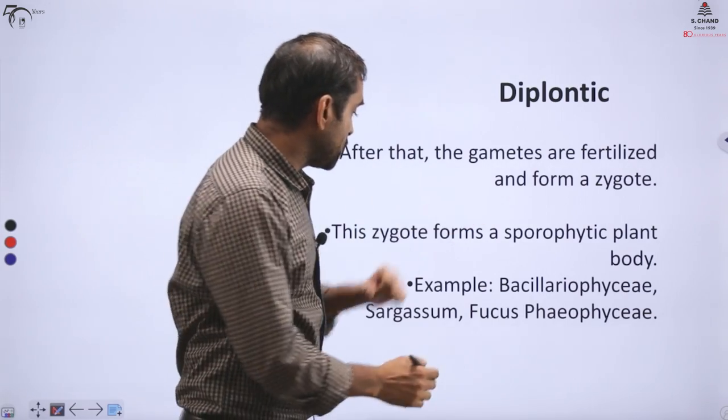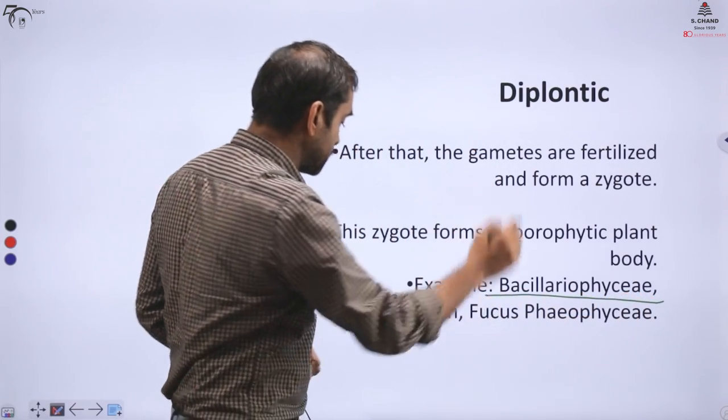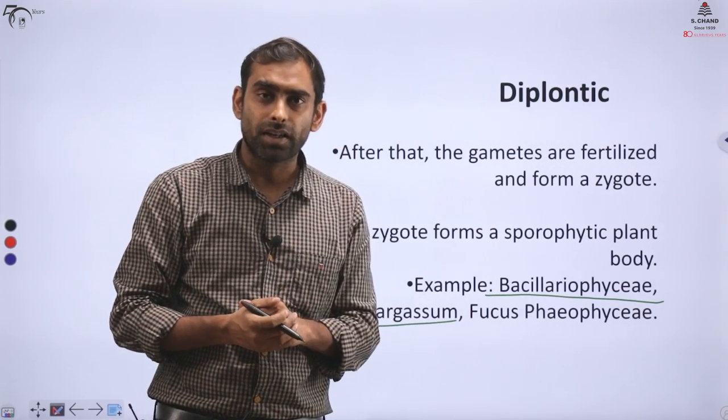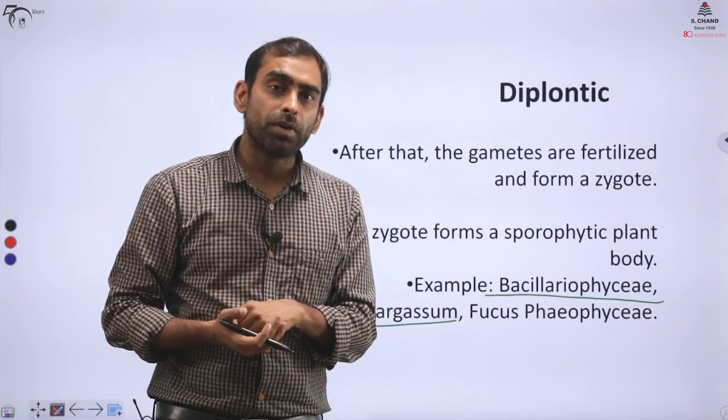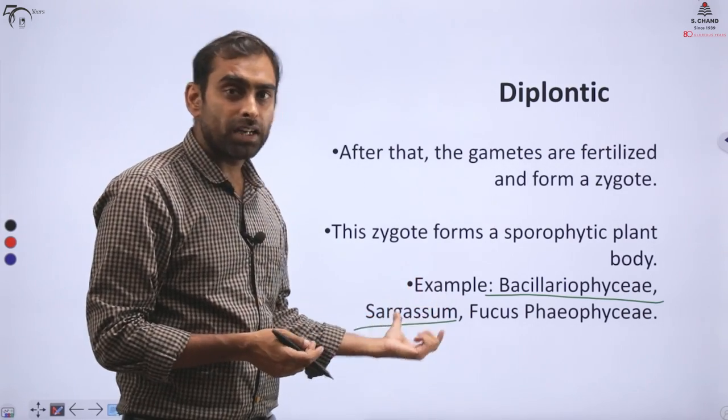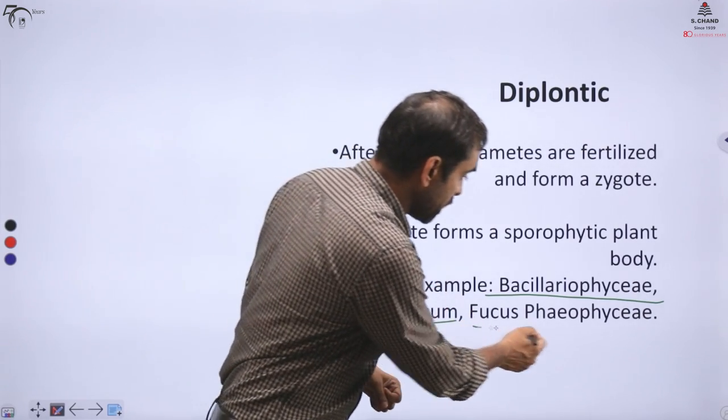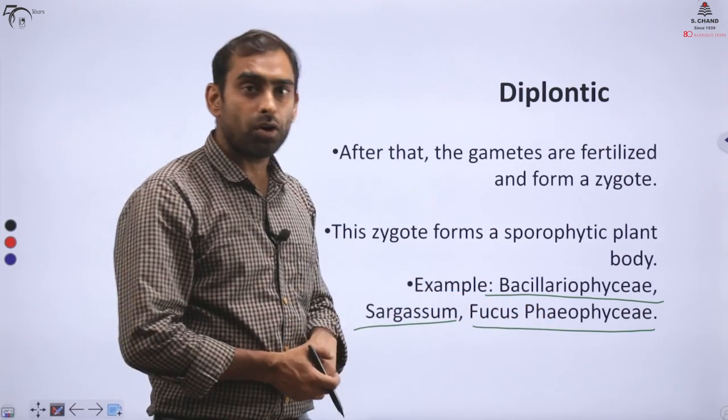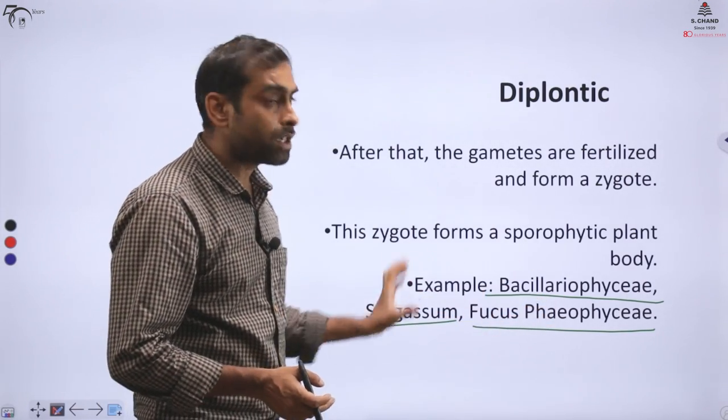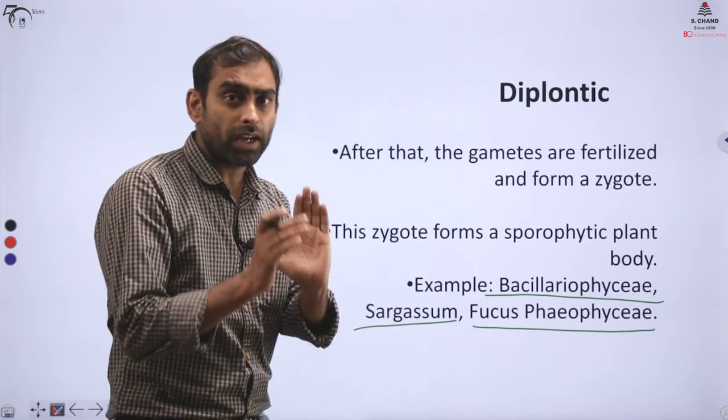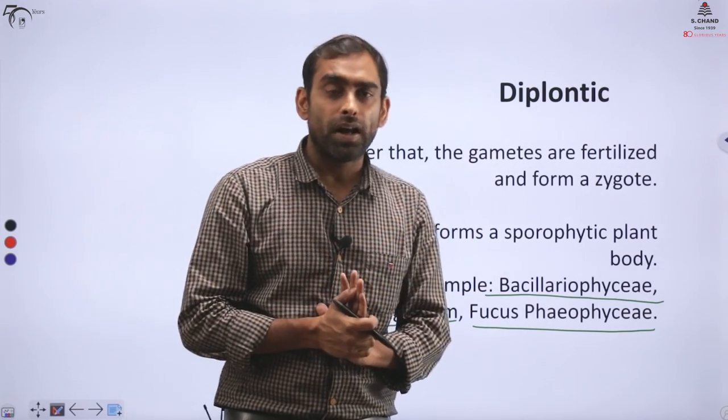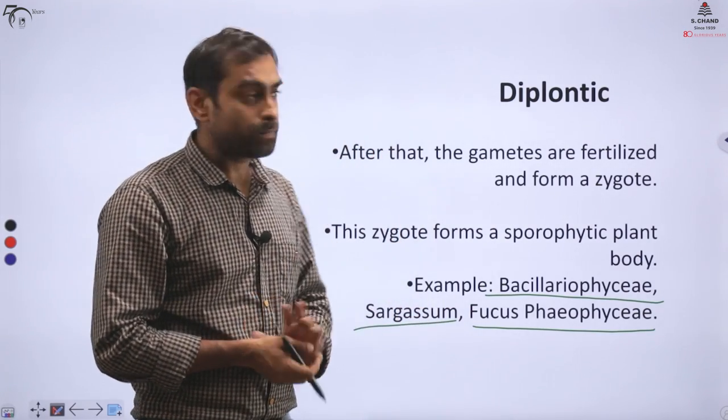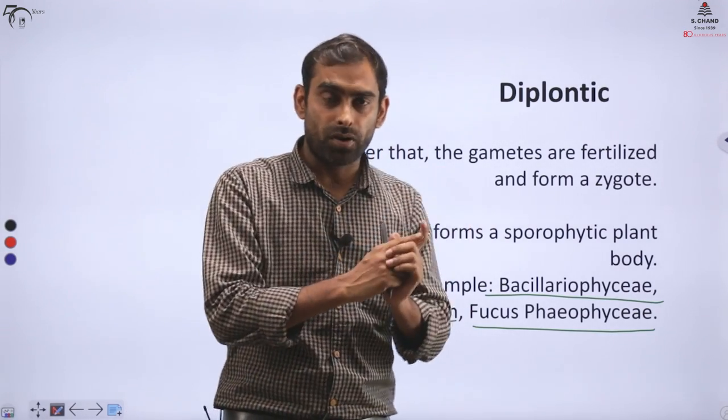So this is called diplontic life cycle. And here as well, the dominant life forms are in this part - this part, you're seeing the organism. That's all about diplontic life phase. If you look at examples, Sargassum - I mentioned this name in the first video, it's a marine algae, Phaeophyceae. Then Fucus, Phaeophyceae. Yellow-brown algae, many of their groups follow a diplontic life cycle. So they can be considered as little more advanced in evolutionary point of scale compared to haplontic algae.